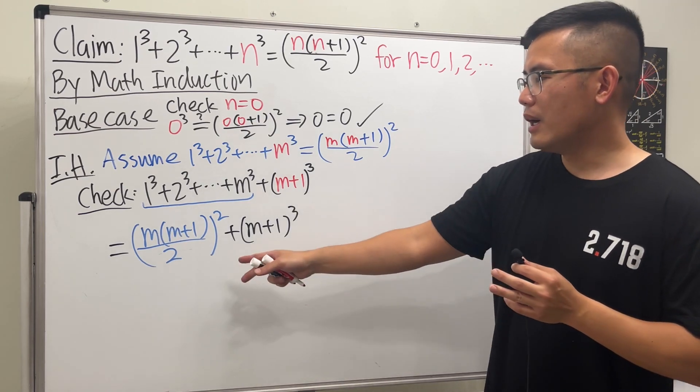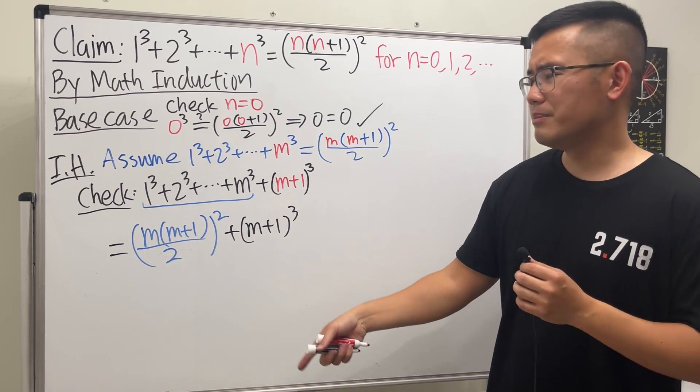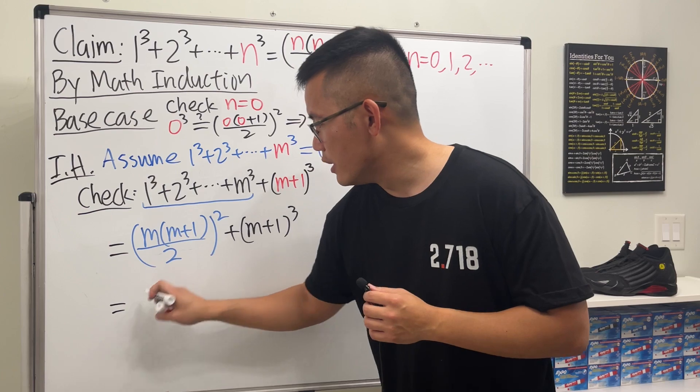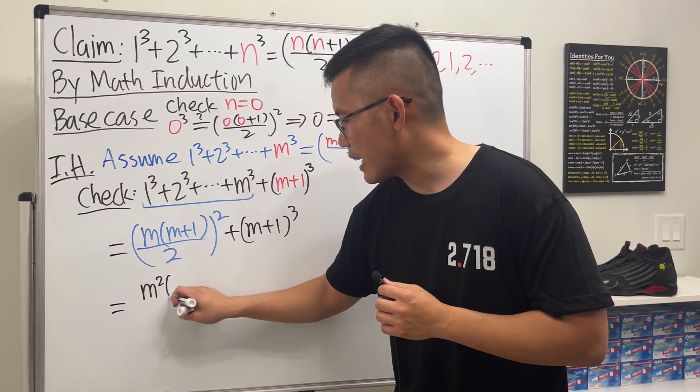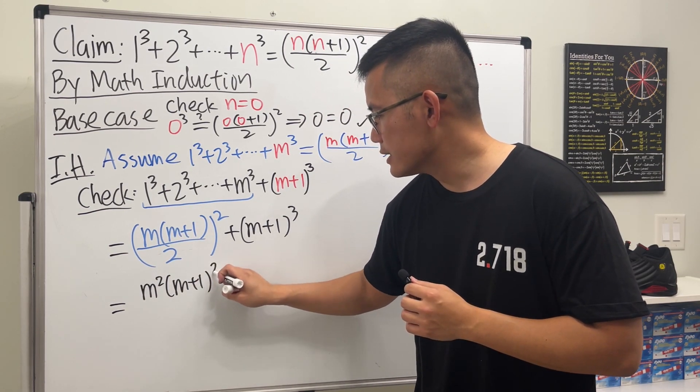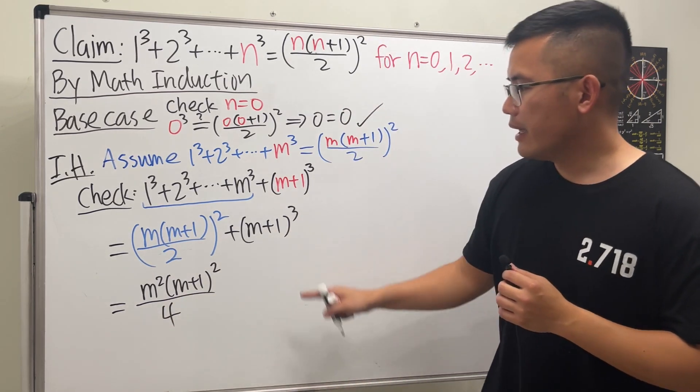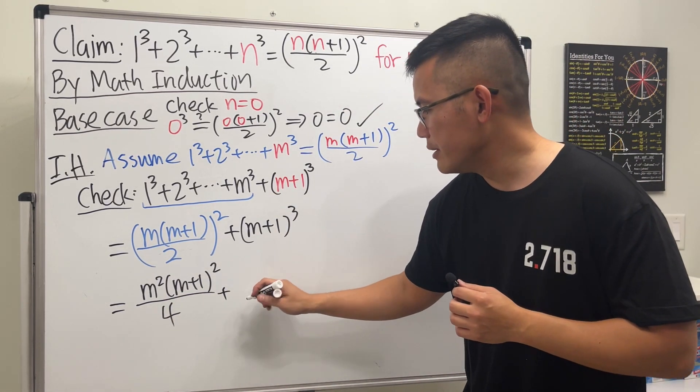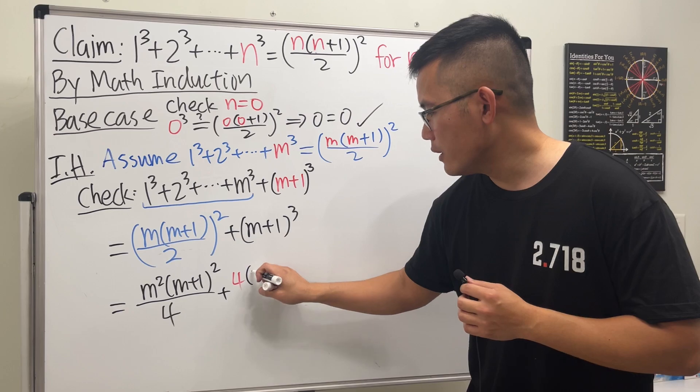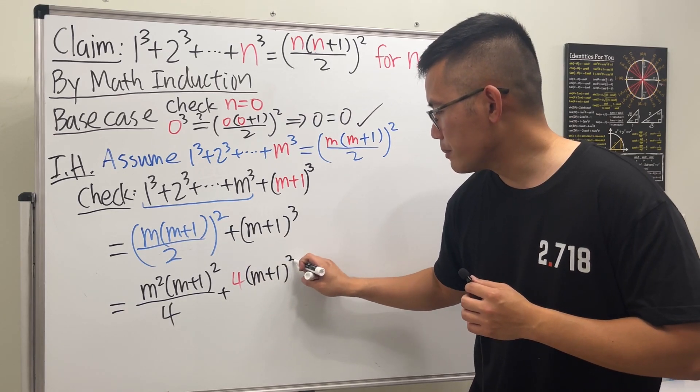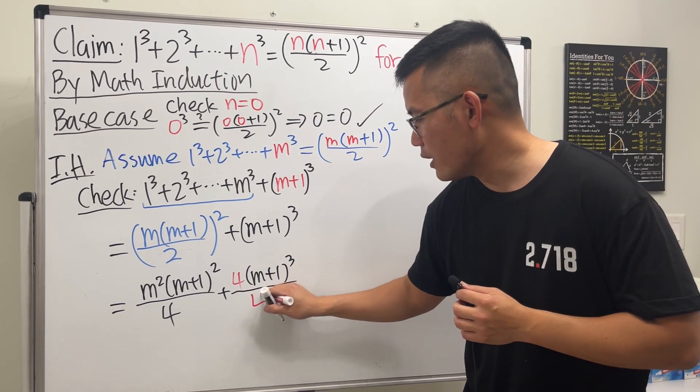Cool. And now I'm not going to multiply everything, but rather I'm just going to fix the power here. So we have m² times (m+1)² over 2², which is 4. And then right here, let's just go ahead and get a common denominator, so we have 4(m+1)³ over 4 like this.